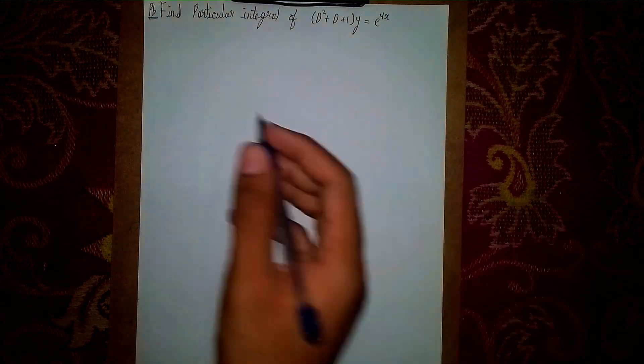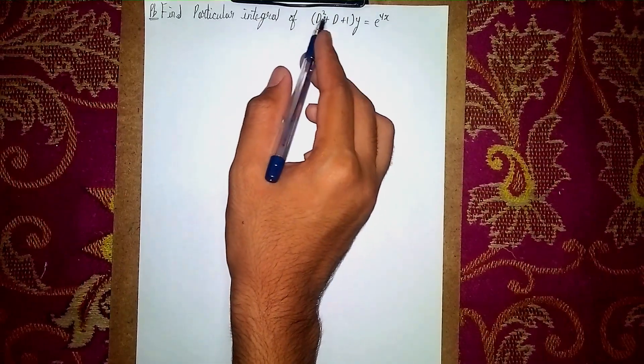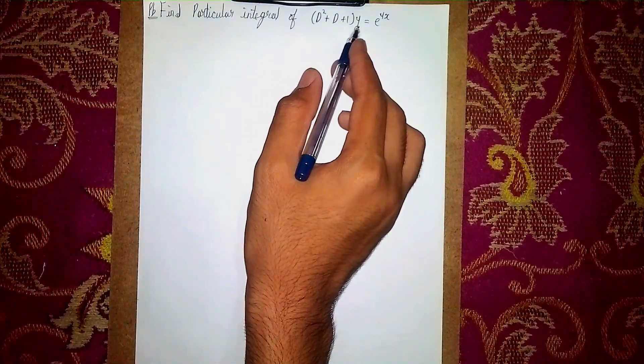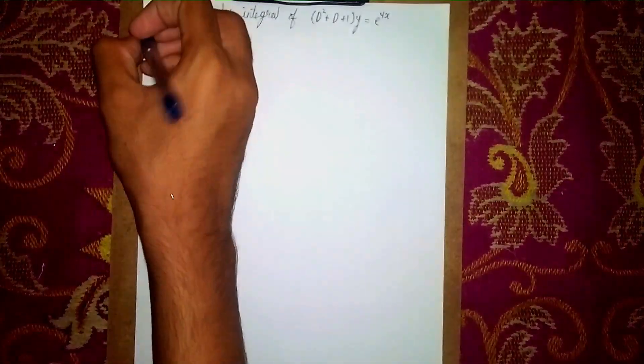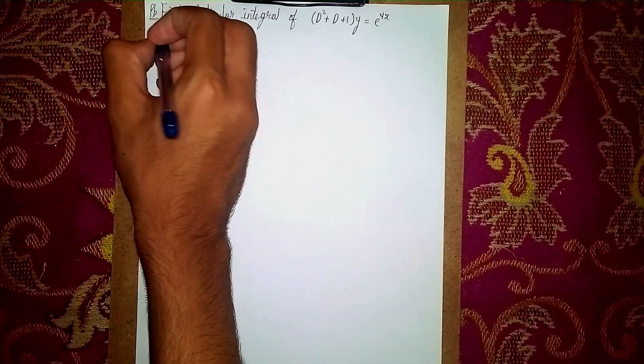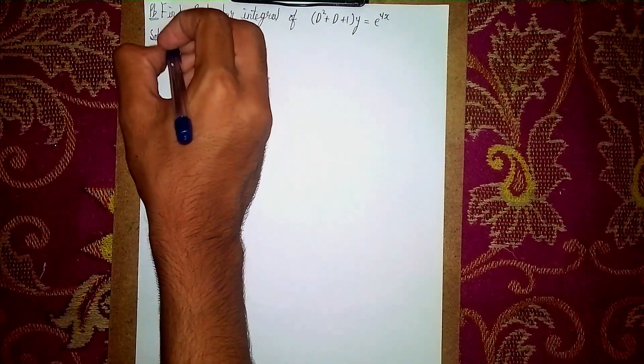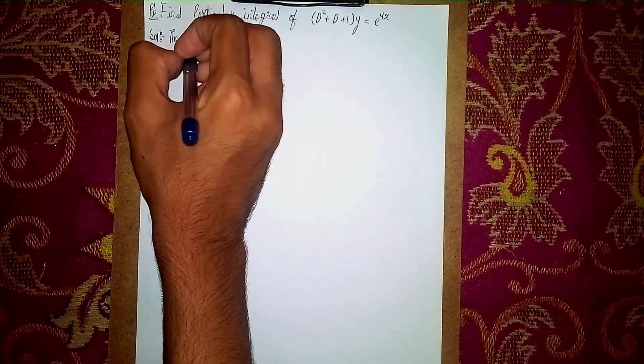Hello, welcome back to my channel. Today I will find the particular integral of d squared plus d plus one bracket into y equals e to the power 4x. This is a non-homogeneous linear differential equation. So first write the solution, then write the first statement.